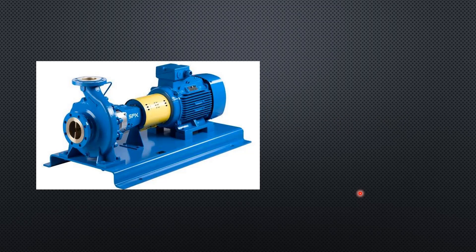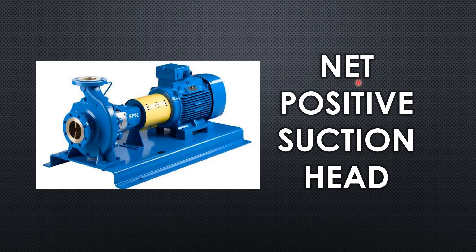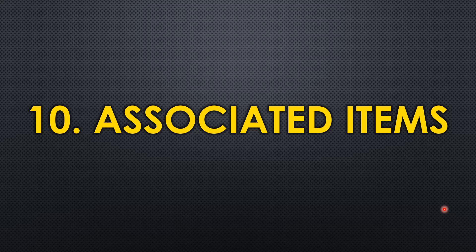The ninth parameter is NPSH — Net Positive Suction Head. This is the minimum suction head required for a pump to operate without cavitation. Cavitation causes air bubbles to enter the impeller, damaging the impeller surface and, over time, causing severe material damage. There are two values: Required NPSH and Available NPSH. You must maintain at least the Required NPSH as a minimum to ensure safe pump piping design.